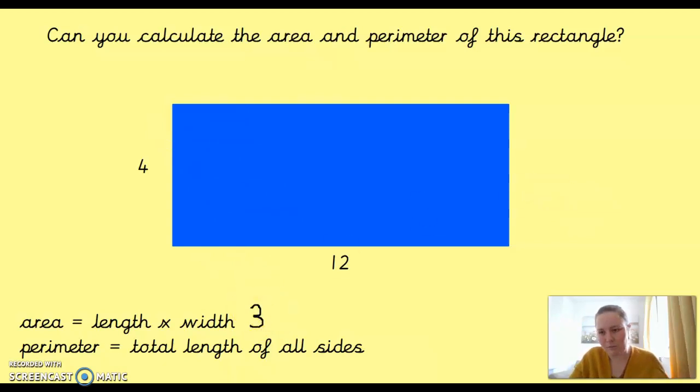So, the area in this case would be, oh, I don't know why I'm writing a 3, because that's not the answer. 4 times 12, 48. OK, now we haven't actually got any units on this rectangle. But if we imagined that these were centimetres, then that would impact what our answer would be, and it would be centimetres squared for area.